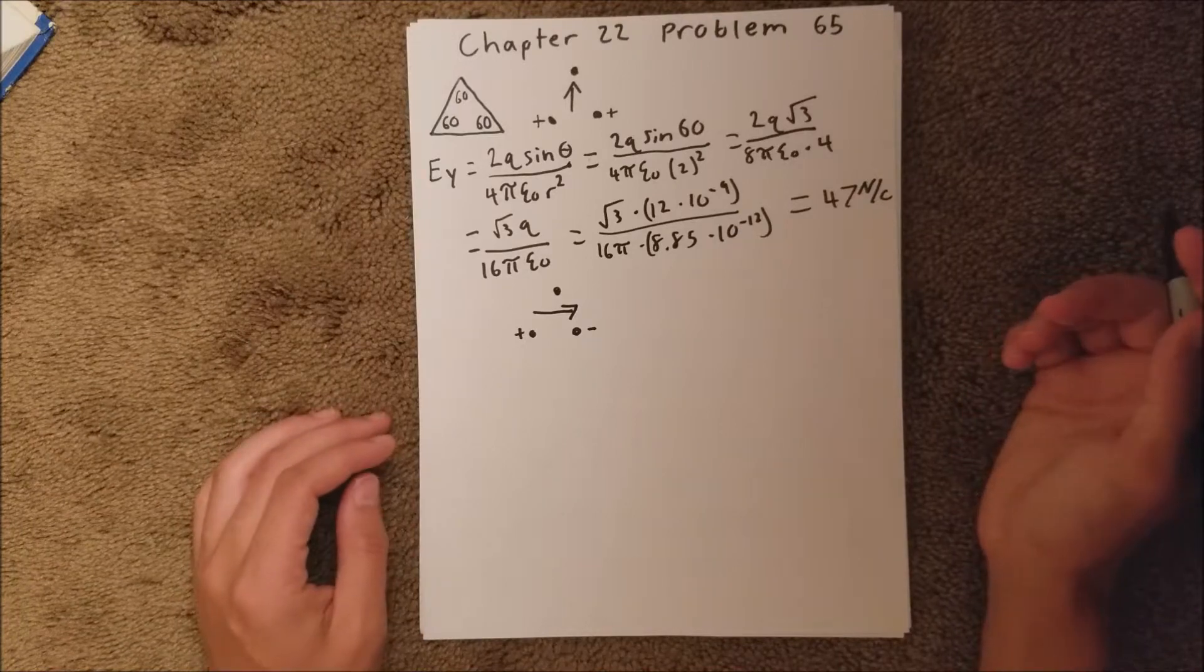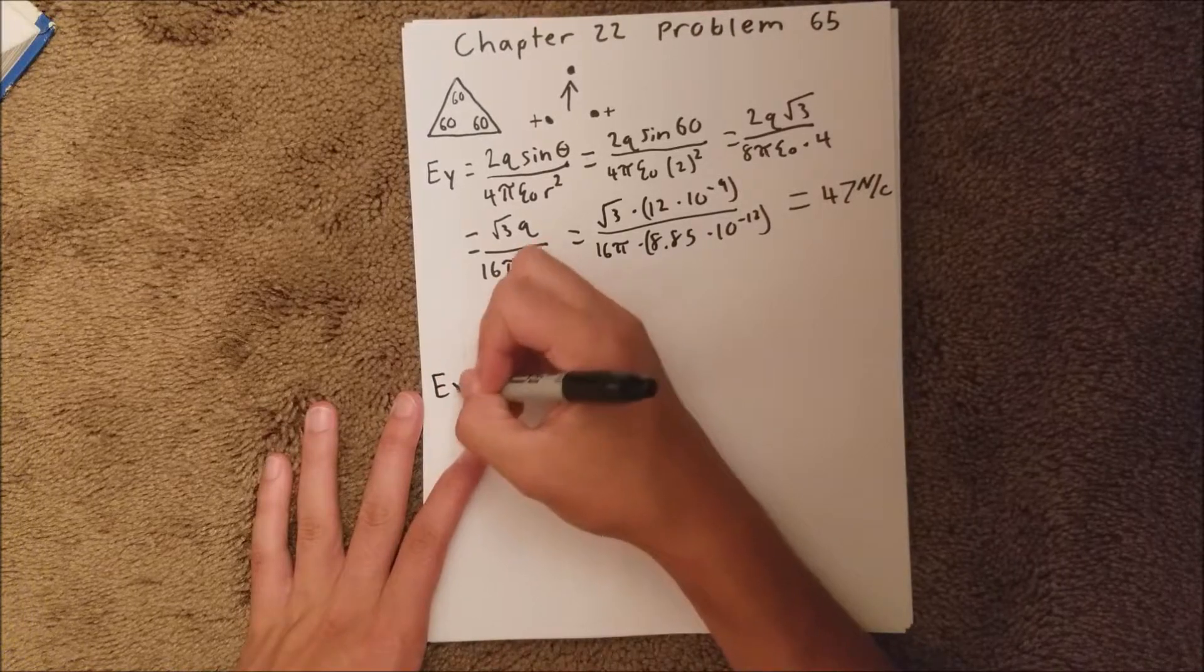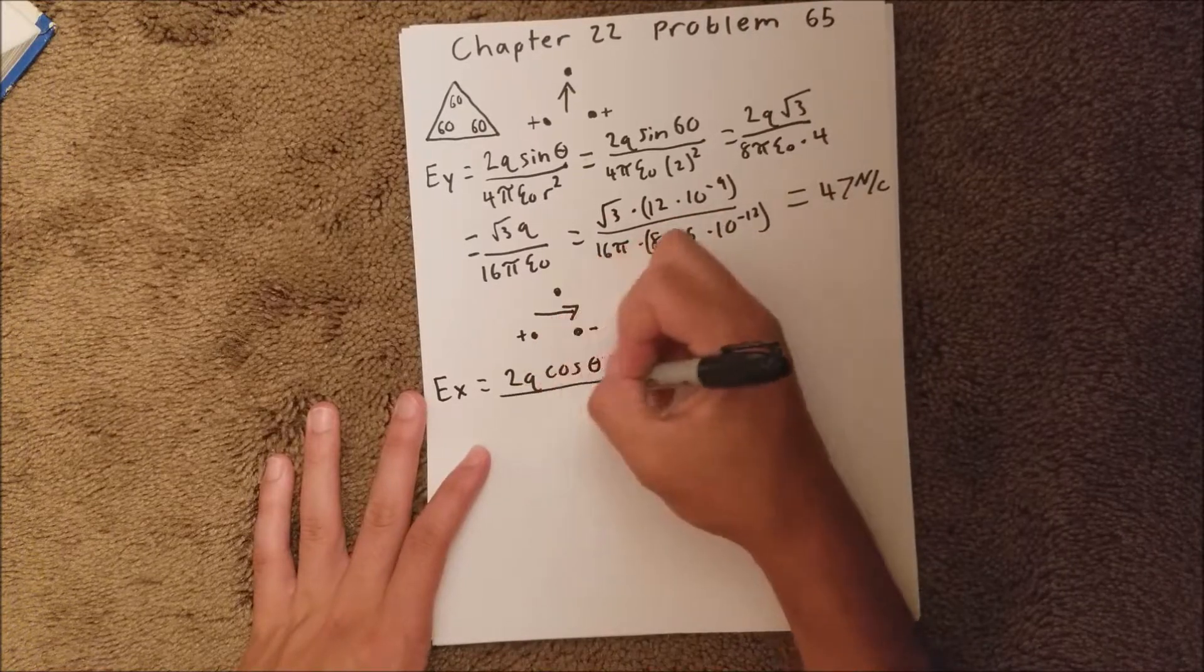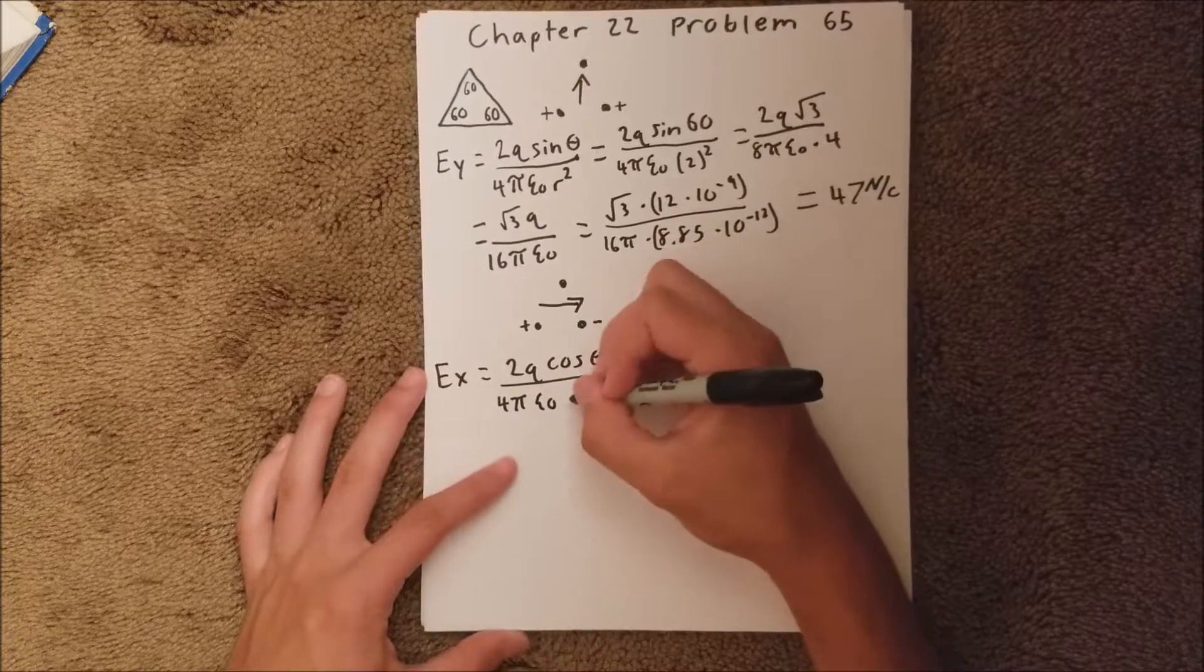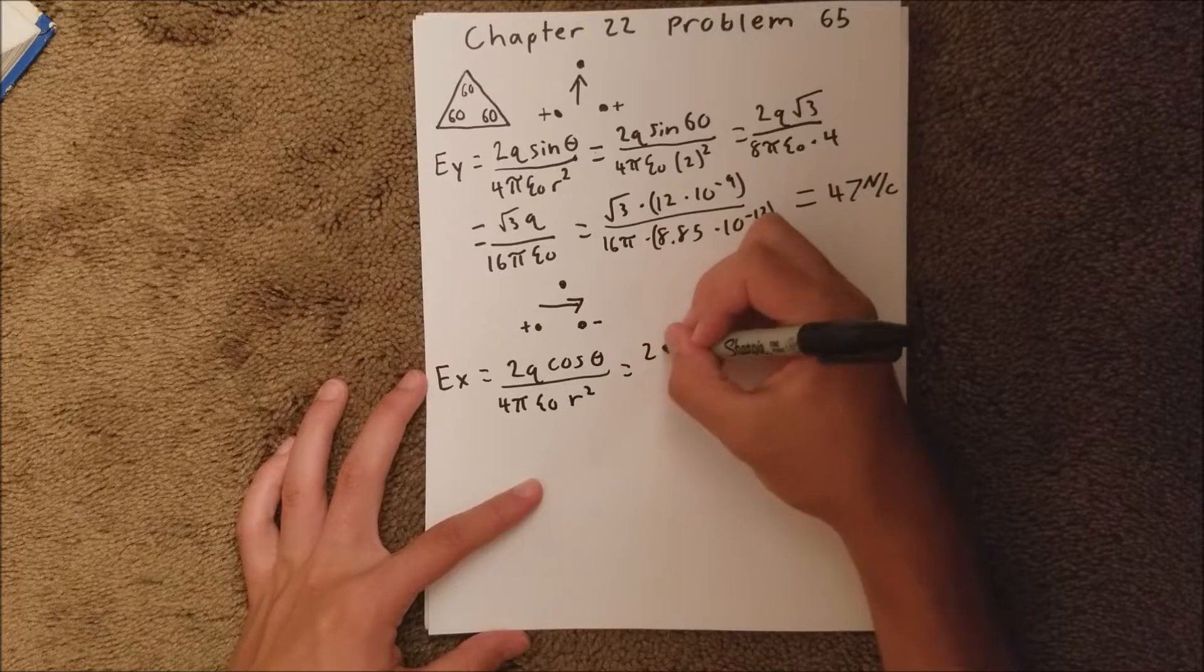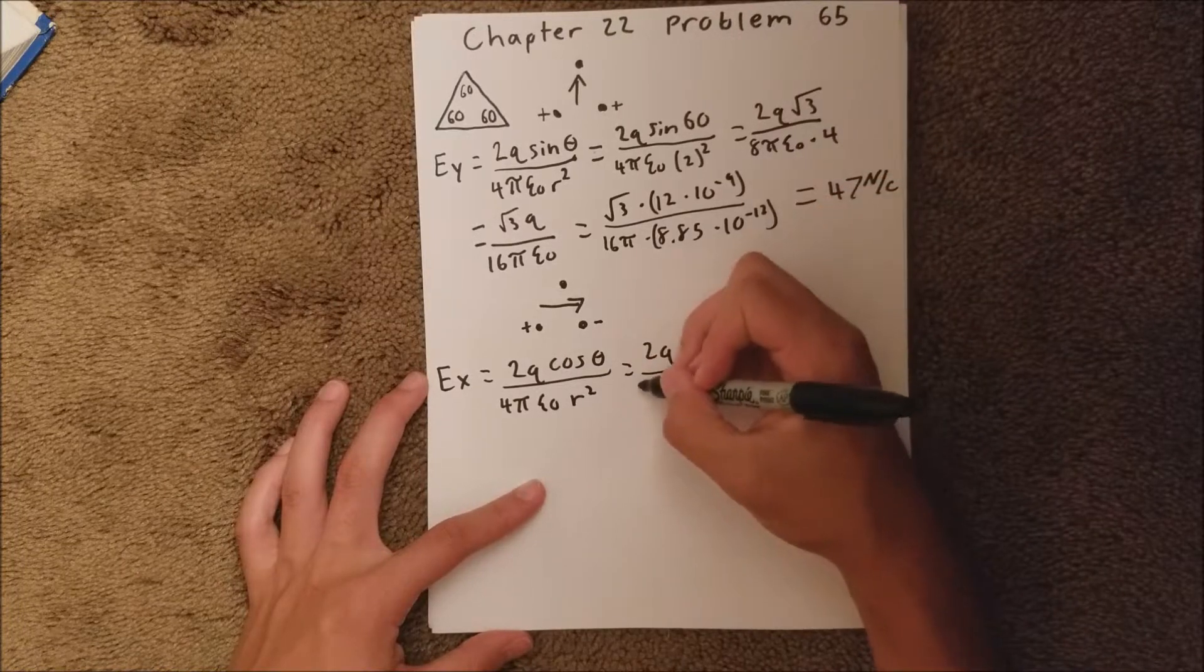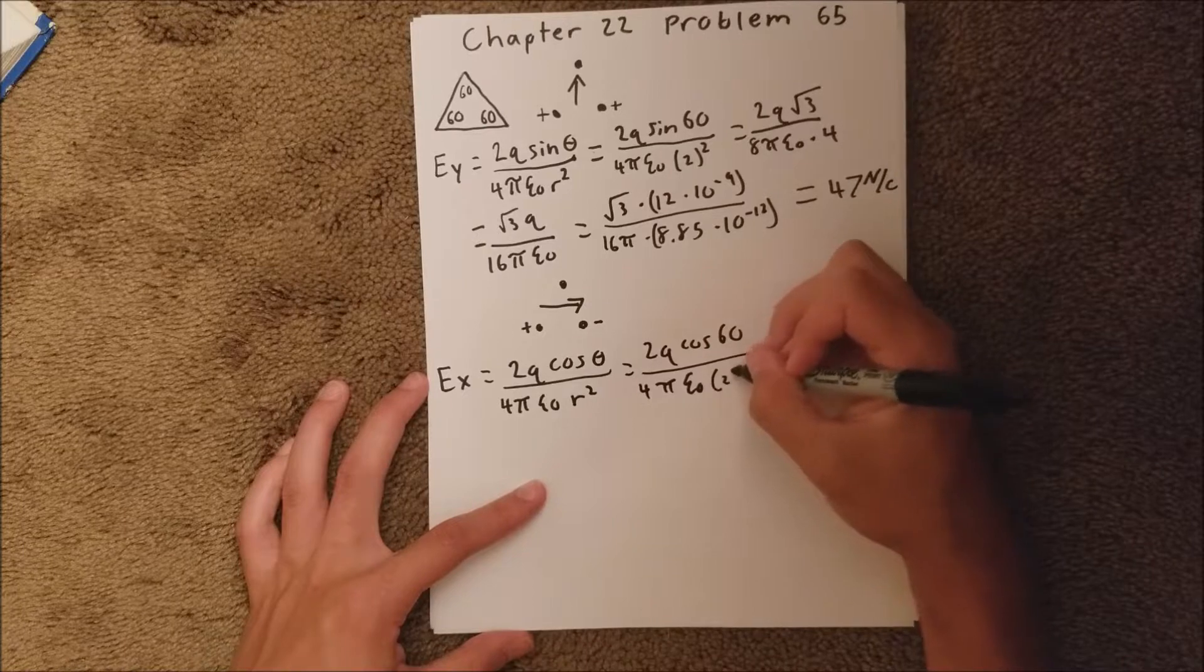So we have to find the x component of the electric field. The electric field in the x is equal to 2q times cosine theta over 4 pi epsilon sub 0 r squared. And that's going to be equal to 2q cosine 60 all over 4 pi epsilon sub 0 r squared.